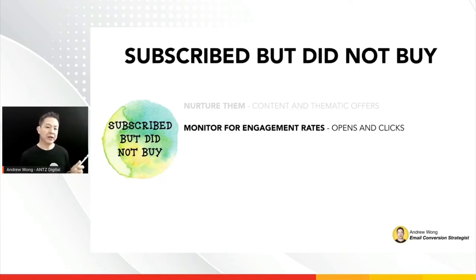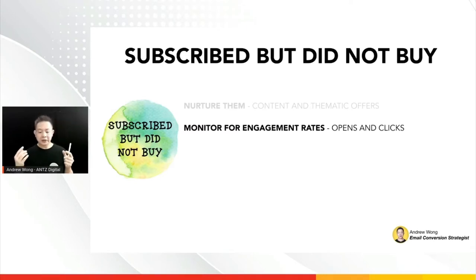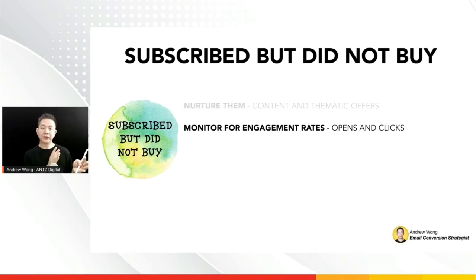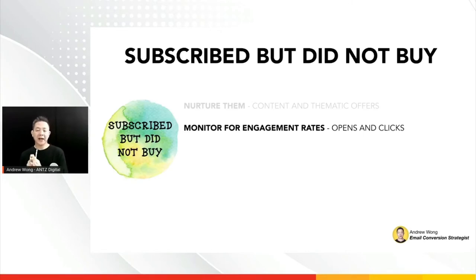If they haven't opened your emails at all or haven't clicked, this is where you do email hygiene maintenance — like Jeffrey mentioned. Segregate people who haven't opened for 30 days, or haven't opened or clicked for the last 60 days, which means they may not be interested. You can either run win-back campaigns, or eventually unsubscribe them yourself so your emails are only sent to people who really want to receive and interact with them.